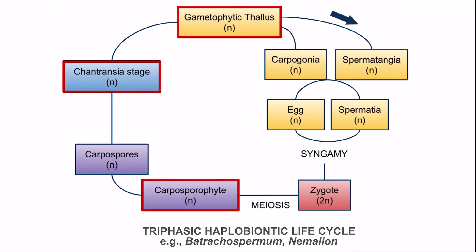The fifth type of life cycle is the triphasic haplobiontic life cycle. Triphasic means there are three phases or three types of thallus in the life cycle. Haplobiontic means the gametophyte is haploid and the two other phases are also haploid.